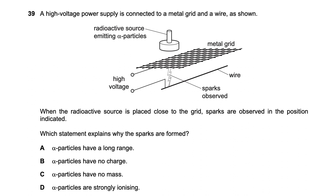Question thirty-nine: a radioactive source emitting alpha particles is placed near a high-voltage metal grid and wire. The alpha particles ionize air molecules, and these ions are then accelerated by the high electric field, producing sparks. Alpha particles are strongly ionizing, which is the key property demonstrated here. Option D is the right answer.